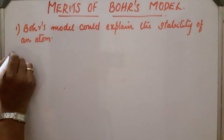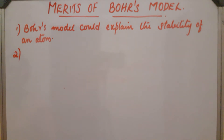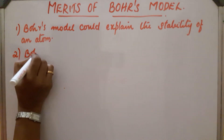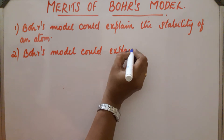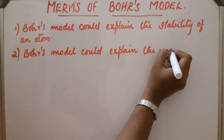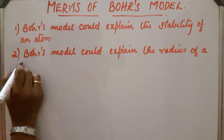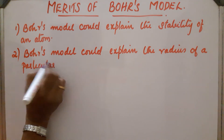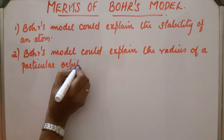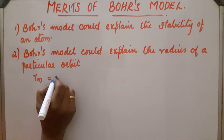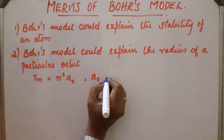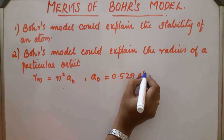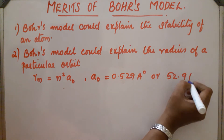Second point: Bohr's model can calculate the radius of an orbit. Bohr's model could explain the radius of a particular orbit. That is, radius Rn will be equal to N² A₀, where A₀ equals 0.529 Angstrom, or we can say 52.9 picometers.